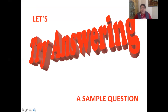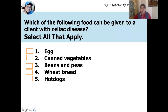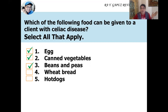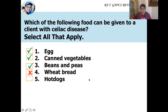Having that knowledge in mind, let's use it to answer a simple question: which of the following foods can be given to a client with celiac disease? Egg — yes, this is gluten-free. Canned vegetables and canned fruits are gluten-free. Beans and peas are gluten-free. Wheat bread — no, that contains one of the items to be avoided. Hot dogs are not allowed because they could potentially contain wheat. So the correct answers are egg, canned vegetables, beans, and peas.